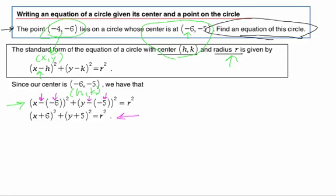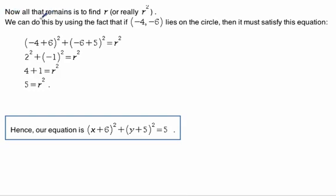Now let's take a look at what we have to do next. All that remains is to find the r or really the r squared because in standard form our equation ends in r squared. So we do this by plugging this in and again this is the x and y. So here's the x, here's the y. We replace those in and then we just chug out the answer. Negative 4 plus 6 is 2 squared. And then negative 6 plus 5 is a negative 1 squared. We square those out and we end up with r squared equals 5.